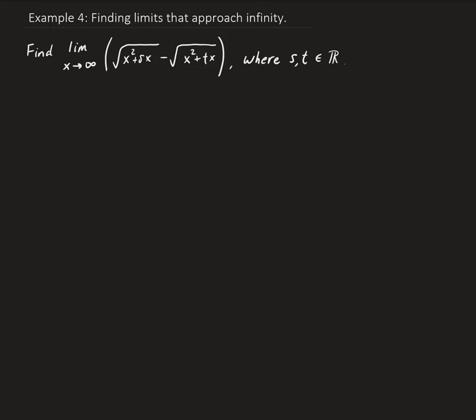In this example, we want to take the limit of this function where s and t are real values, such that x is approaching infinity. If we plug in infinity for x, we end up getting infinity minus infinity. So this is an indeterminate result.